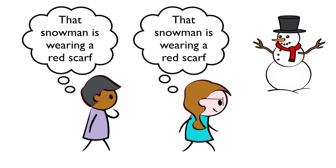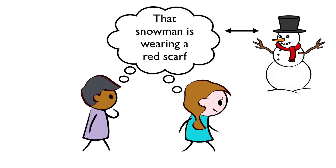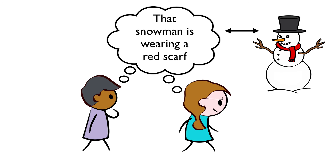Carl comes along and sees the same snowman and also forms the belief that the snowman is wearing a red scarf. How many beliefs are depicted? One answer: Carl has his belief and Susie has her belief — so there are two beliefs. Another answer: there is only one belief, since Carl and Susie both believe the same thing. Using the type-token distinction, we can say there are two belief tokens, but only one belief type. The belief type is expressed by the propositional content of the belief, and propositional content is something that can be shared.